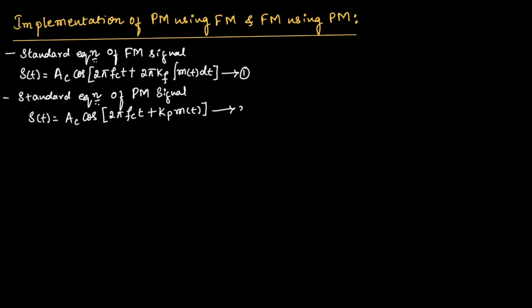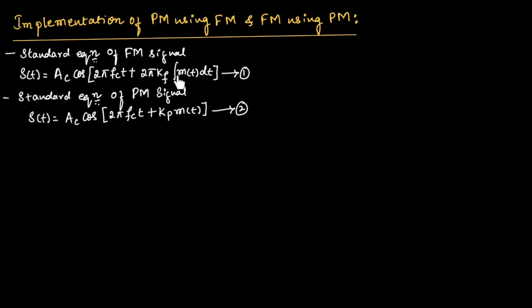Let us call this equation number 2. Comparing equation 1 and equation 2, we can say that the equations are almost similar with few changes. That's why it is possible to implement the FM signal using a phase modulated signal, and we can implement a phase modulated signal using a frequency modulated signal.